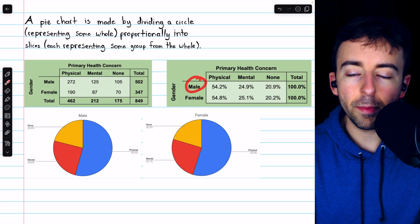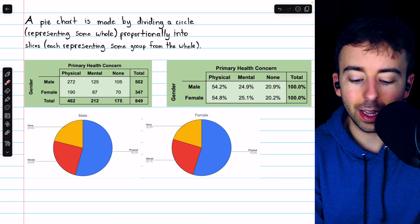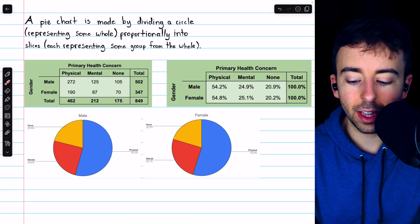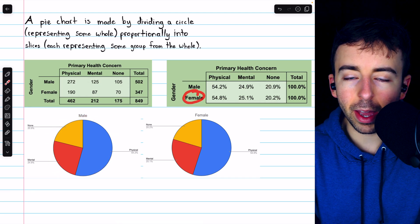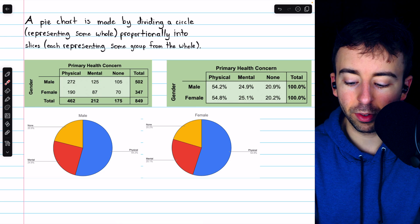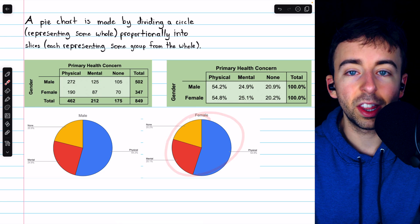In this case, we can look at all of the males as a whole, and thus make a pie chart for the males and their primary health concerns. And we can look at the females as a whole, and represent their primary health concerns with a pie chart.